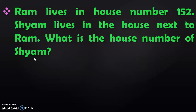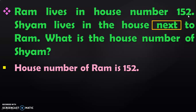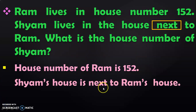When a word problem is given, you should look out for the keyword. The keyword in this sum is the word 'next'. We know that Ram lives in house number 152. First, take and write down the statements that are given in the word problem. House number of Ram is 152. The next information given is that Shiam's house is next to Ram's house. So we have to find the number next to 152 to know the house number of Shiam.